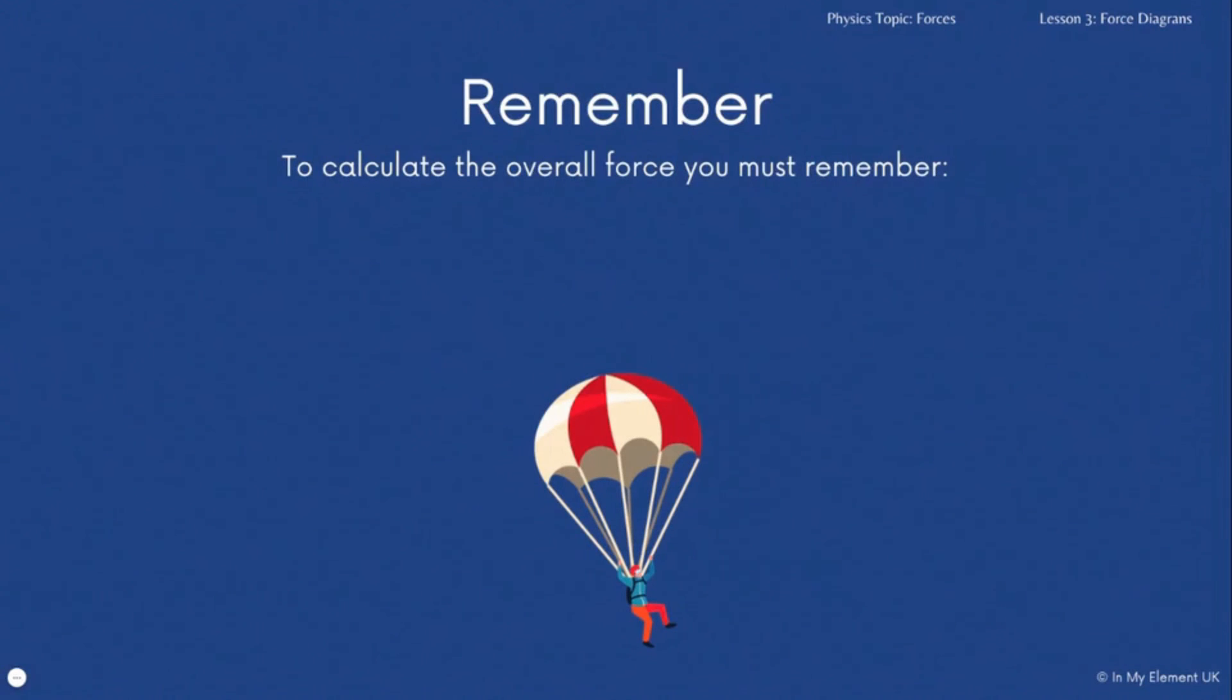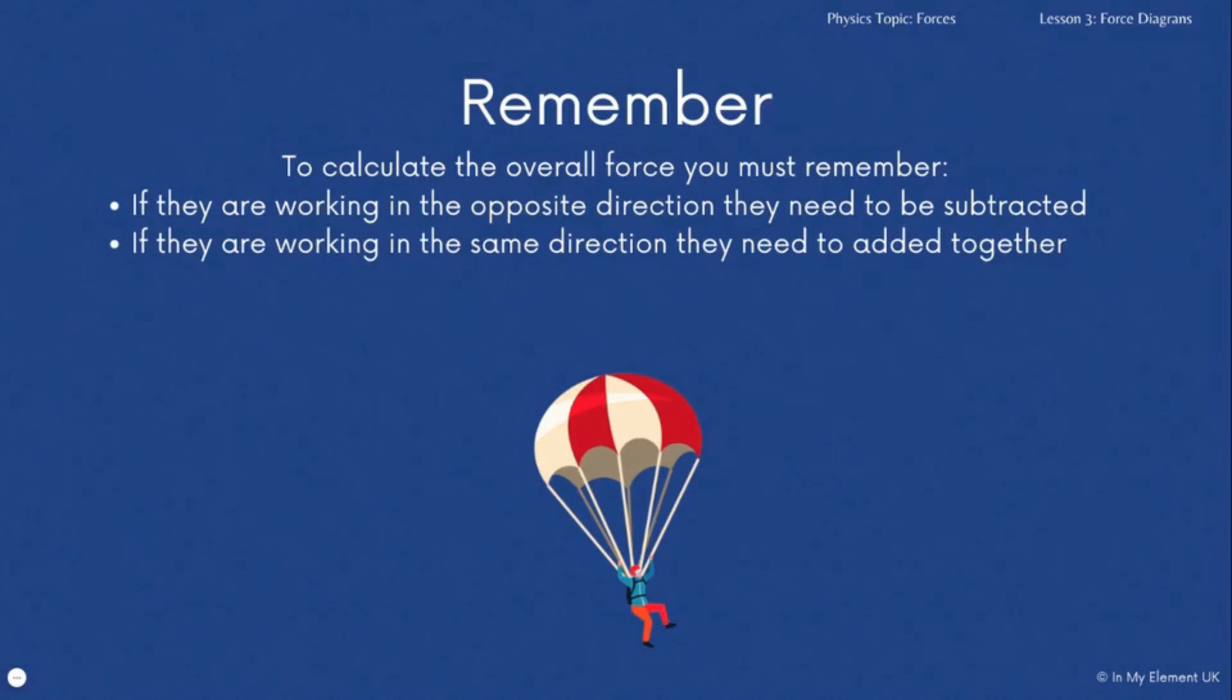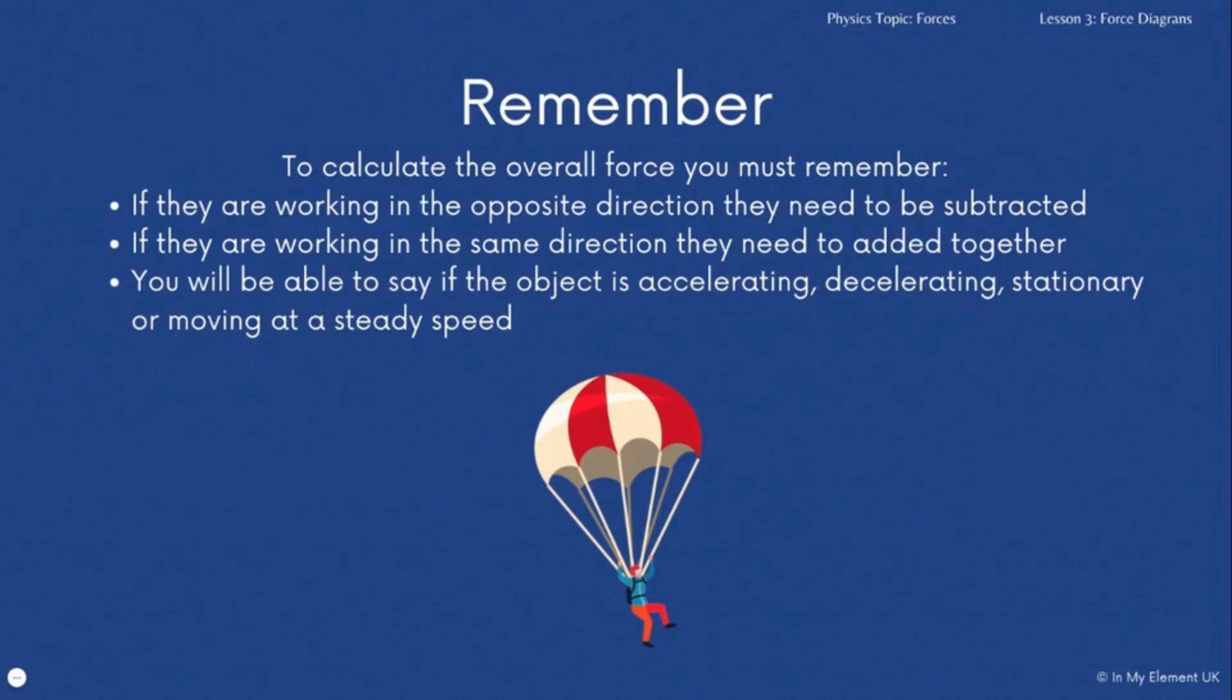To calculate the force what you need to remember is if they're working in the opposite direction you need to take them away like we've been doing. If they're working in the same direction then you add them together. That way you can say whether the object is accelerating, decelerating, stationary or moving at a steady speed.